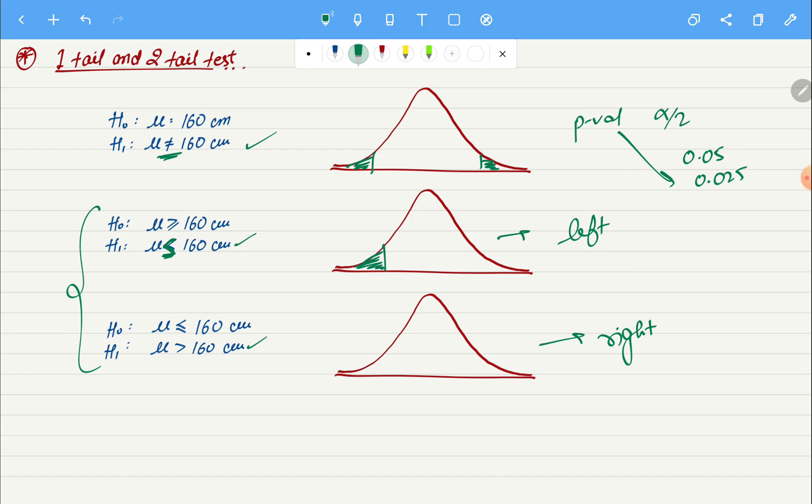And again in this case you don't really have to divide it by two because you are just testing one tail. So whatever is your significance level, you will compare it with your p-value. And in case of right tail test, your p-value will lie on the right tail, and again here also you will compare your p-value with alpha and not alpha divided by two.